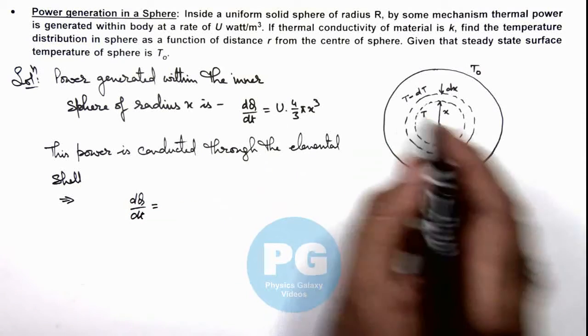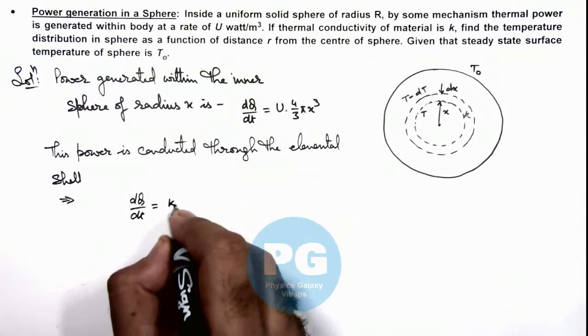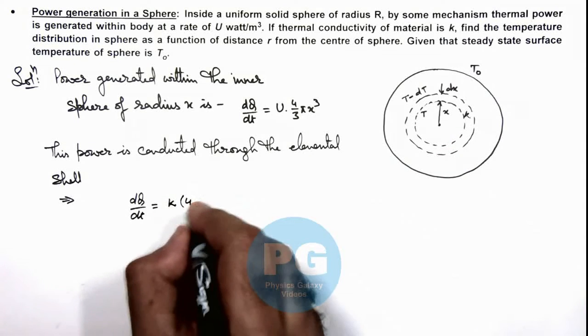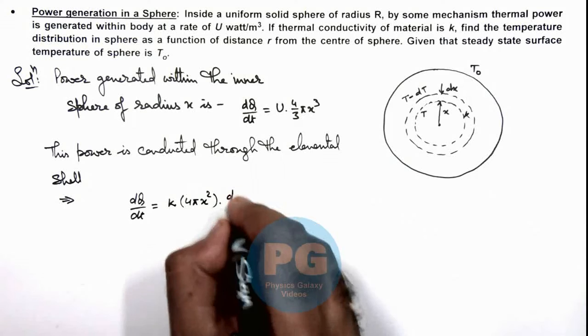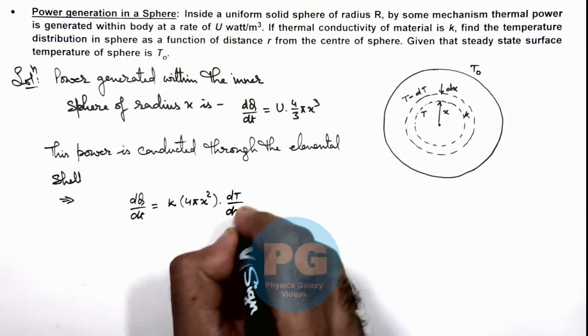If here thermal conductivity is k, we can write k multiplied by its area 4πx², multiplied by temperature gradient dT/dx.